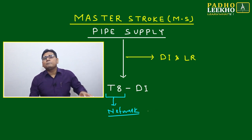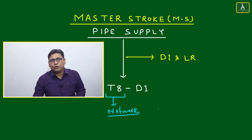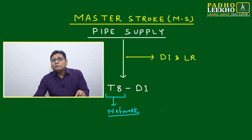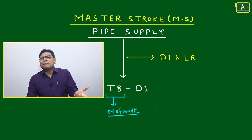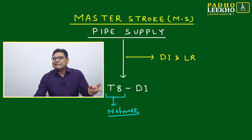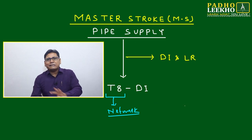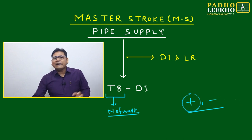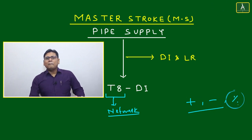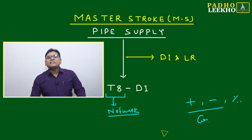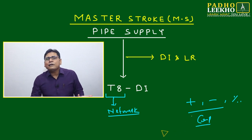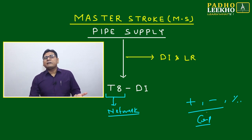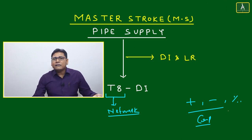This pipe supply concept is important because petroleum and gases are supplied over thousands of kilometers using this method. The underlying math is very basic — it is based on addition and subtraction only. At most, we may add a little percentage or comparison of data. Despite the simple math, the questions are interesting and at a good level.